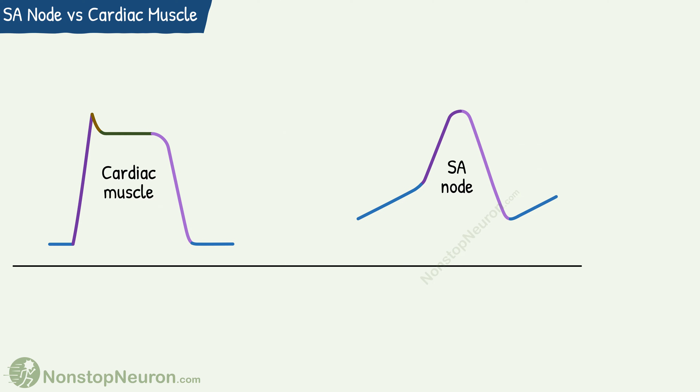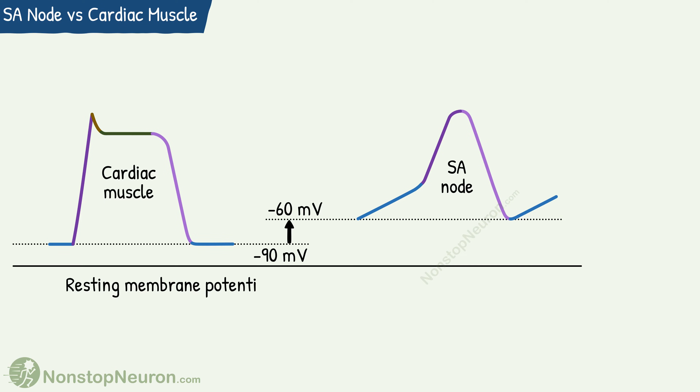Now let's bring both graphs side by side and see the differences. First, the resting membrane potential in the SA node is about minus 60 mV, whereas that in the ventricular myocyte is about minus 90 mV. Thus, the resting membrane potential is less negative in the SA node as compared to that in the myocyte. The reason is cells in the SA node contain leaky sodium and calcium channels. Through these channels, sodium and calcium keep leaking into the cell, and this entry of positively charged ions makes the potential slightly less negative.